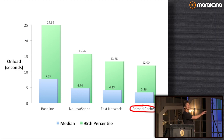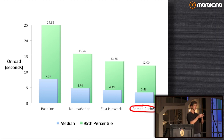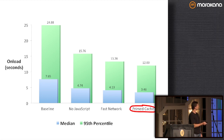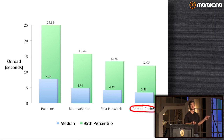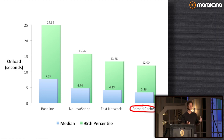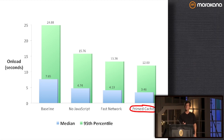Even though my research focus is caching, I actually thought JavaScript would be the biggest factor. Let's jump to the results. The baseline was about 7.65 seconds — the average of median-of-three runs across each website. Disabling JavaScript got us to 4.7 seconds. Going to a fast Fios network was much bigger than I expected: 4.13 seconds.